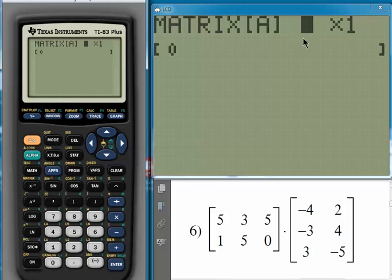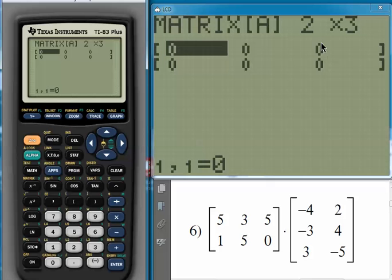Now, by default, the matrix size is a one by one, but our matrix here, the first one for number six, is a two by three. So press two, enter, and then three, enter. And now our matrix is size two by three, and we can enter the numbers into the matrix.